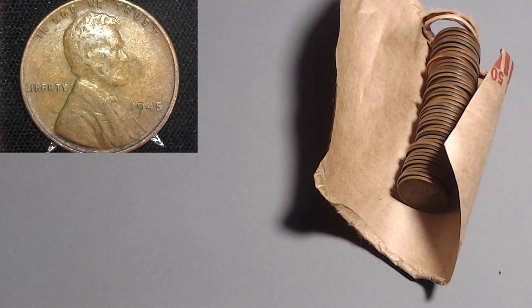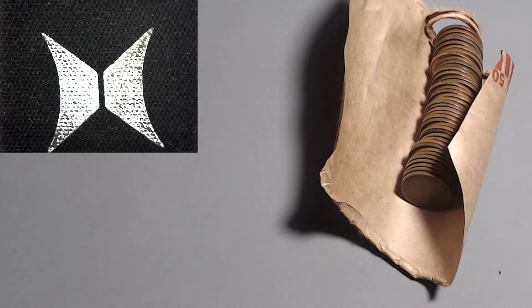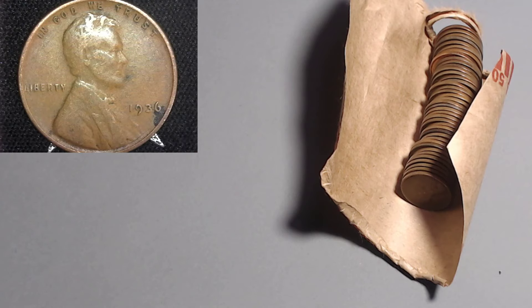Next, we got a 1945 Philadelphia. The 45 Philly with over 1 billion. You can get out from under my microscope. Over a billion for a wheat cent. Get out of here. Next, we got a 1936 Philadelphia. The 1936 Philly with 309 million again.